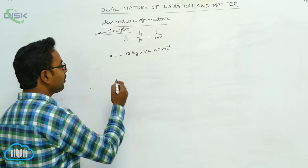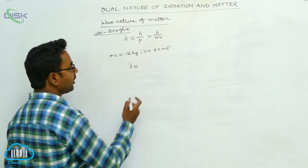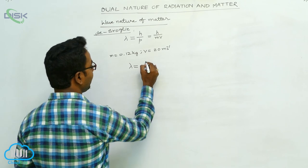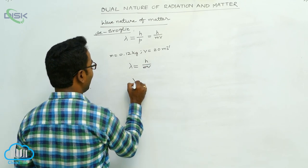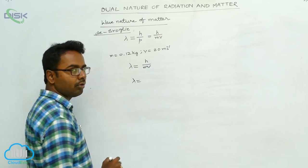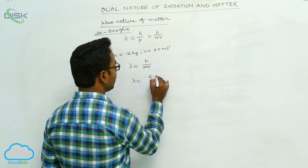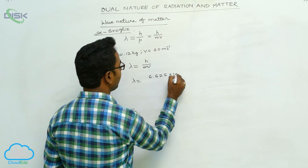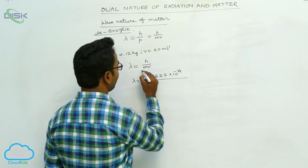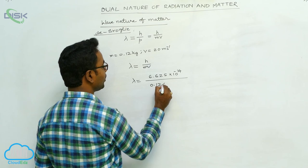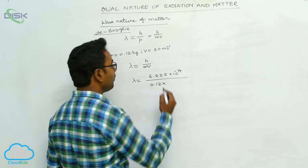According to de Broglie, the wavelength of matter waves is given by lambda equals h by mv. Here h is Planck's constant, whose value is 6.625 times 10 to the power minus 34 joule-second. The mass of the ball is 0.12 kg and the velocity of the ball is 20 meters per second.